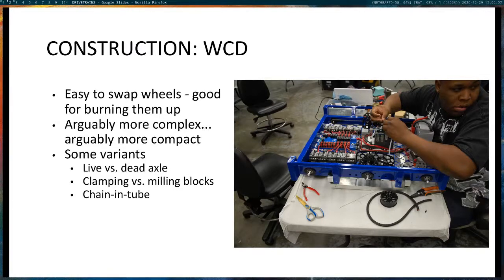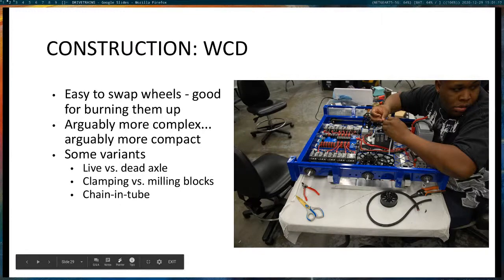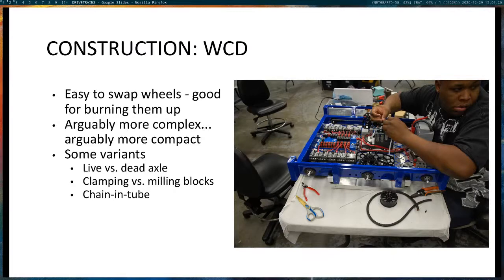Let's talk about construction methods. A West Coast Drive is a common layout for tank drives — wheels are accessed from the outside on stub axles, easily changed and swapped, with high serviceability. These drives can be more compact with just a single drive rail and fewer structural components. There are variants: a live axle rotates with the wheel, while a dead axle doesn't rotate and requires a sprocket directly on the wheel to transmit torque.